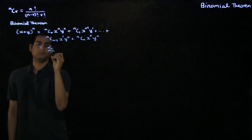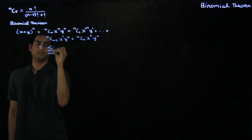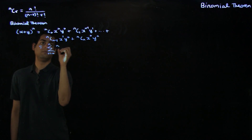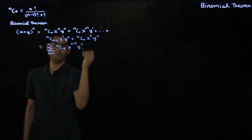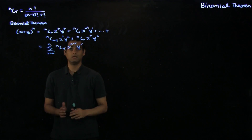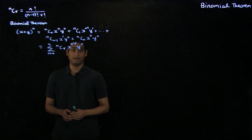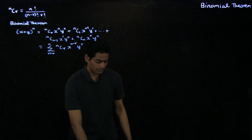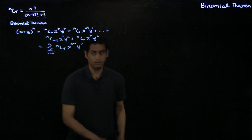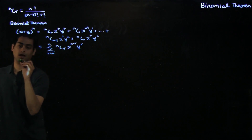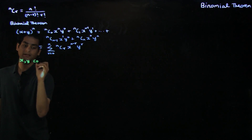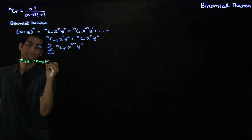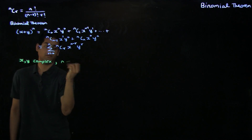This can be more succinctly written as the summation r equal to 0 to n of nCr times x to the n minus r times y to the r. So the binomial theorem can be taken to be an identity in x and y. The binomial theorem is applicable for x and y complex, and n being a positive integer.